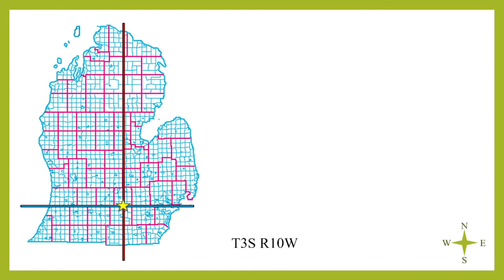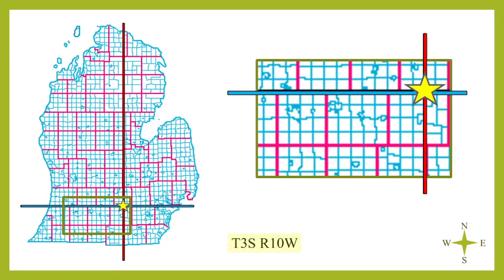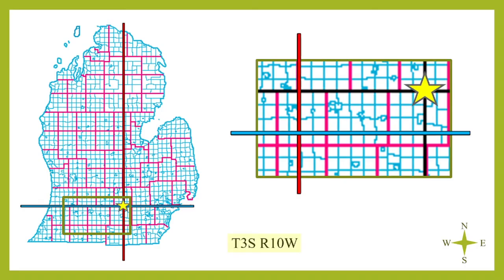With this system, any given township can be efficiently identified. For example, to find the township noted as T3SR10W, simply count three townships south of the baseline and ten townships west of the principal meridian, positively identifying Pavilion Township of Kalamazoo County as Township 3 south, range 10 west.